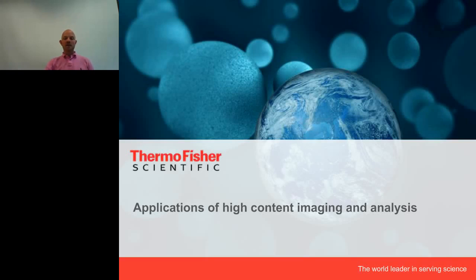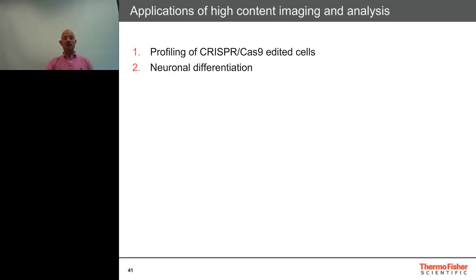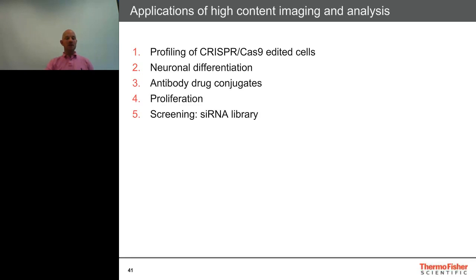For the second part of the presentation, let's look at a few applications of high content imaging and analysis. We'll look at how we can use high content imaging with cells modified by CRISPR-Cas9 genome editing, applications of neuronal differentiation, use of antibody drug conjugates, proliferation within cell populations, and finally a screening application examining an siRNA library.